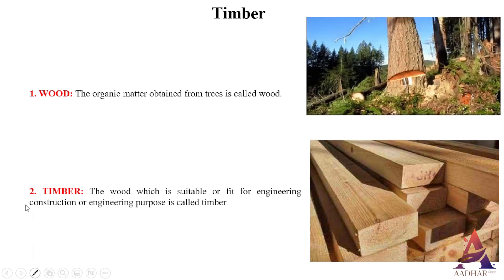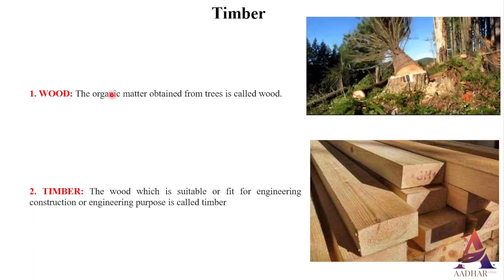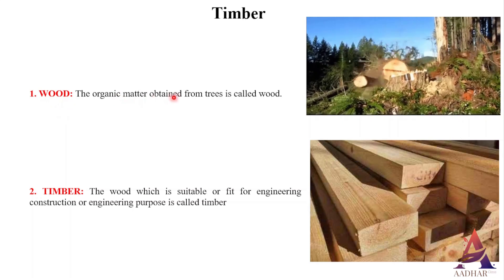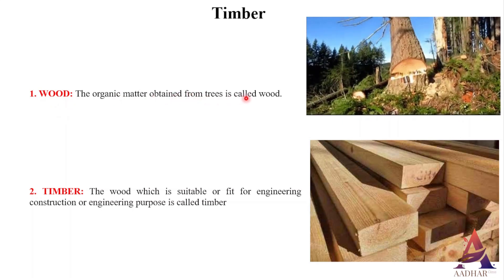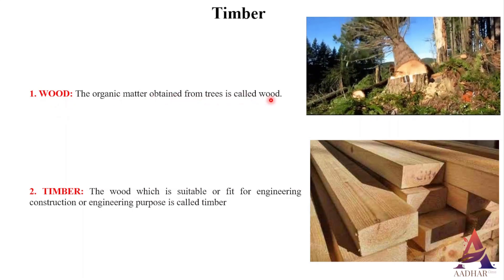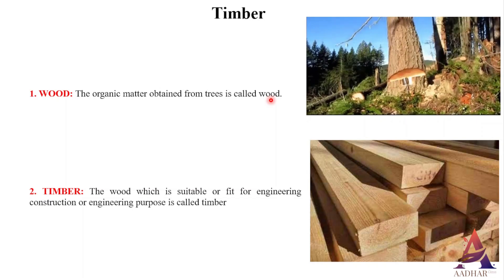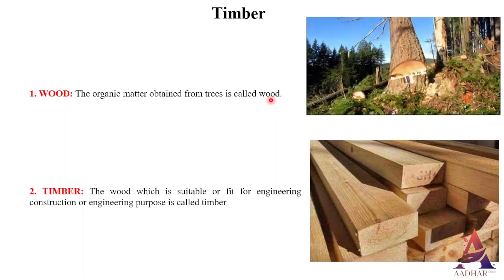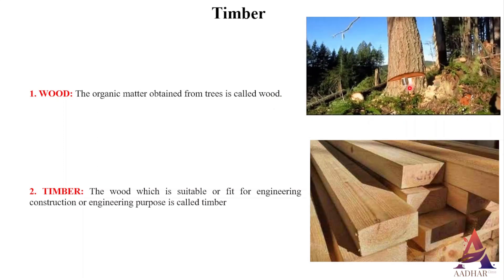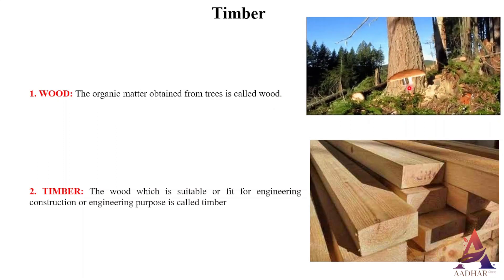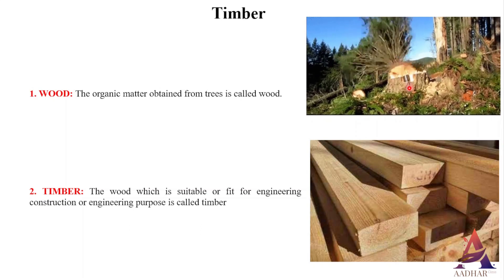First of all, what is wood? Wood is an organic material with fibrous, heterogeneous and anisotropic texture produced from the tree, which is a living organism. Wood is one of the oldest building materials. In simple words, the organic matter obtained from trees is called wood.